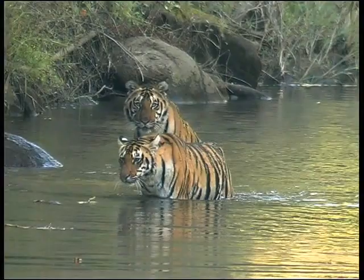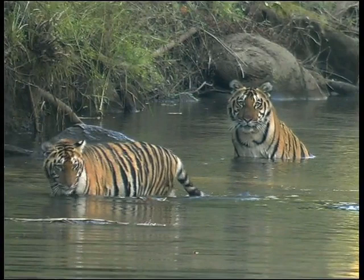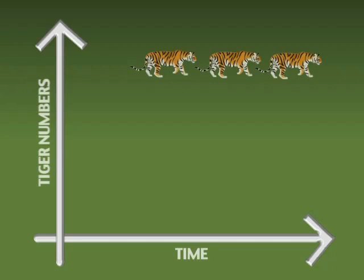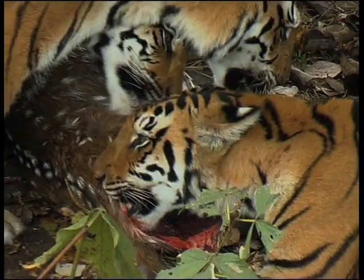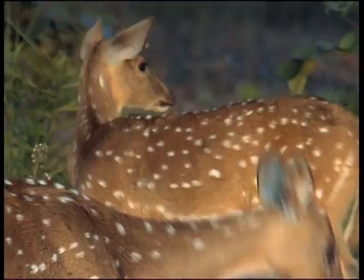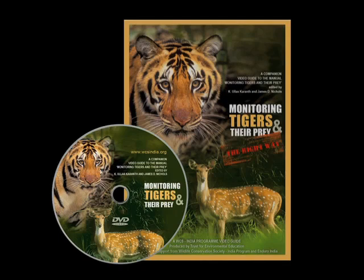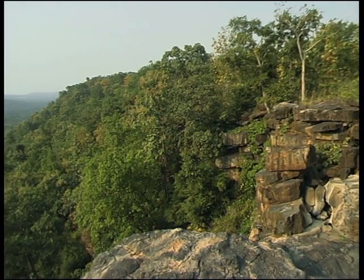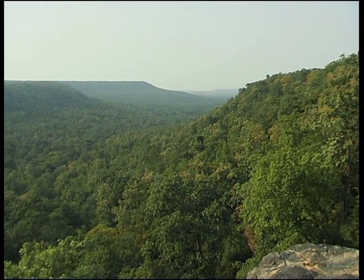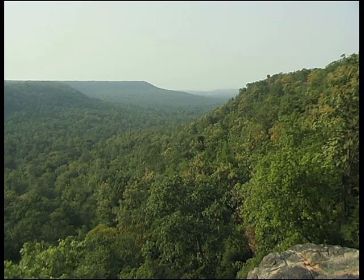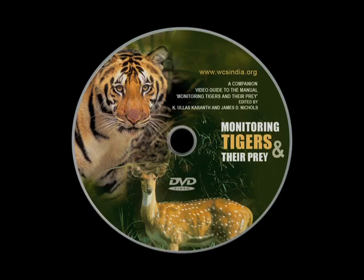To effectively conserve tigers in the wild, it is important to be able to reliably estimate and monitor their numbers. This will tell us whether tiger populations in various reserves are going up, going down or holding steady. Since tiger numbers are generally closely linked to the availability of prey, monitoring tigers also involves reliably estimating the numbers of prey animals in a forest. Since it is impossible to count each and every animal in a forest, attempting total counts or censuses of wild animals is usually impractical. The scientific techniques described here are based on well-tested sampling methods which can provide reliable results if used correctly.